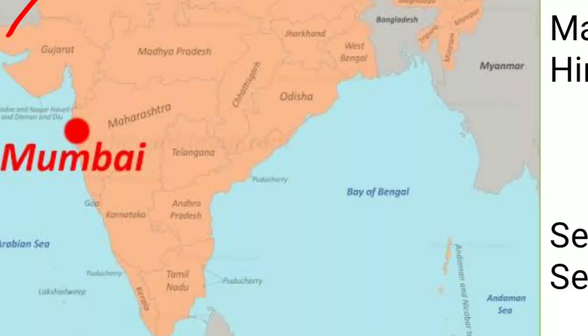Now let's move on to Mumbai. You can see here the Arabian Sea along this coast. Mumbai is the capital of the state of Maharashtra. This is the boundary of Maharashtra, and this is Mumbai.